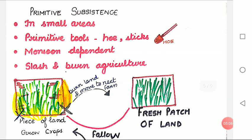Let us talk about primitive subsistence agriculture. This type of farming is still practiced in a few pockets of India. It is practiced on small patches of land with the help of primitive tools like hoe and digging sticks, using family and community labor. This type of farming depends upon monsoon, natural fertility of soil and suitability of other environmental conditions for the crops grown. It is a slash and burn agriculture.